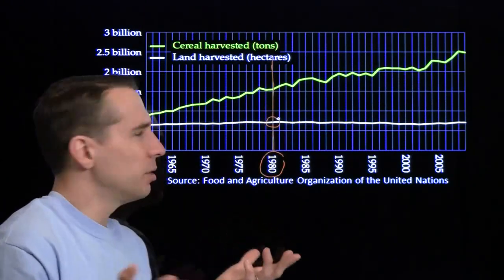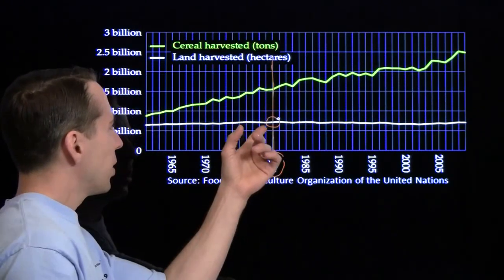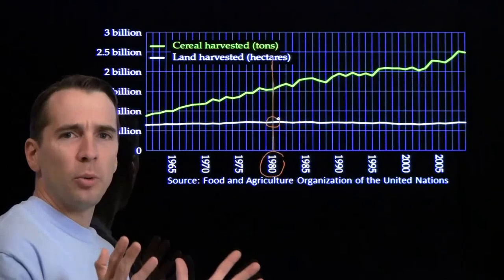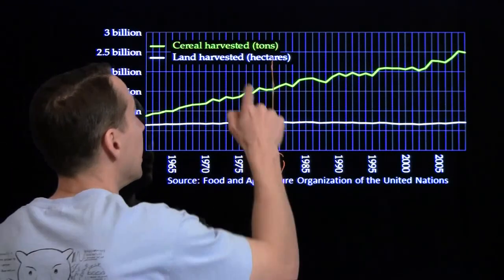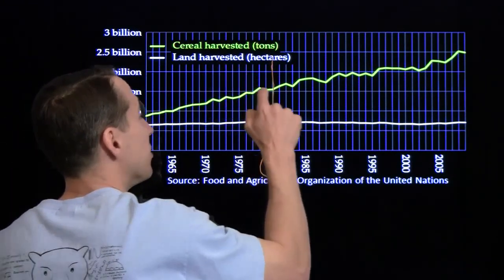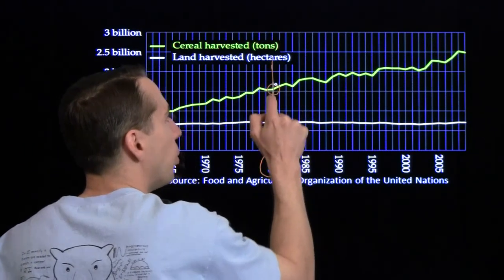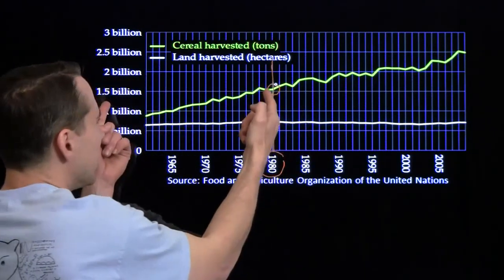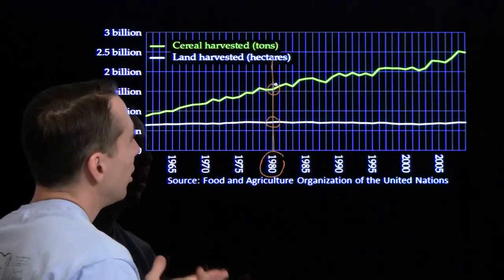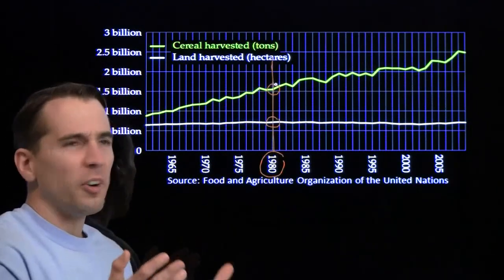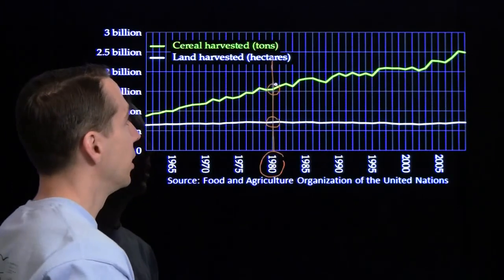So this is probably around 0.7 or 0.71 or 0.72 — something like that — around 0.7 billion hectares of land harvested. Now, to figure out the amount of cereal harvested, we keep going up to the yellow line. We see that it's a little bit higher than 1.5 billion, so maybe 1.52 billion tons of cereal harvested.